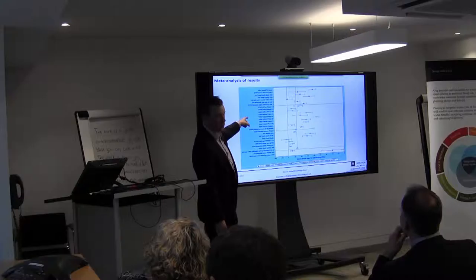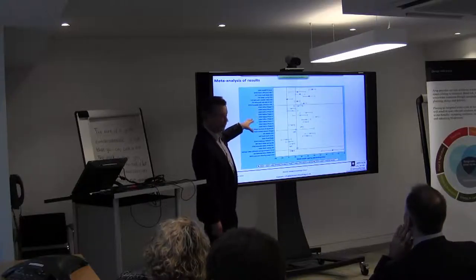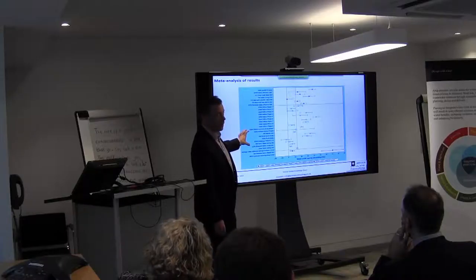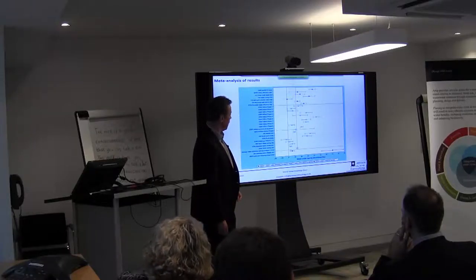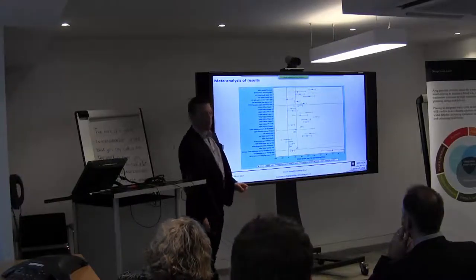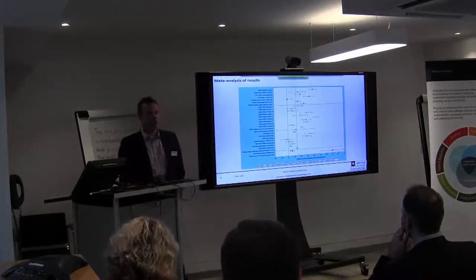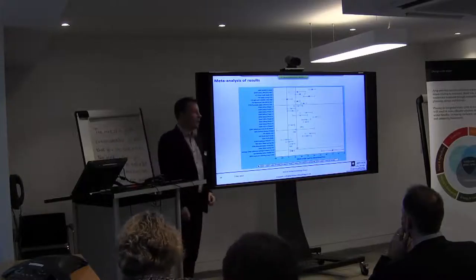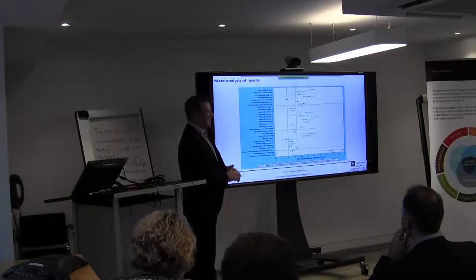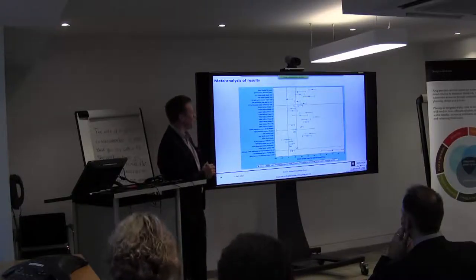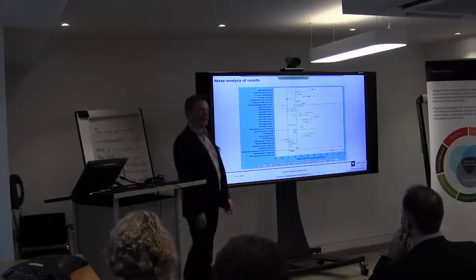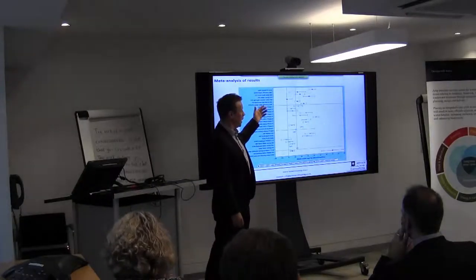The weighted mean includes the seven studies from the phase one project from 2012, plus the nine individual phases of the Essex and Suffolk Water H2ECO study - which are all a little bit different - and then the nine other studies identified from this project. The mean saving across all of those is 13.5 litres per property per day, or about 3.5% of consumption.